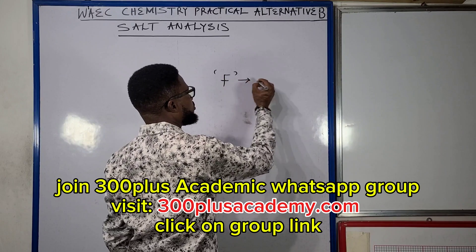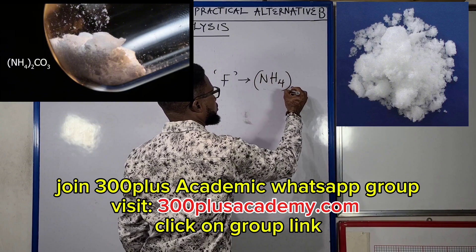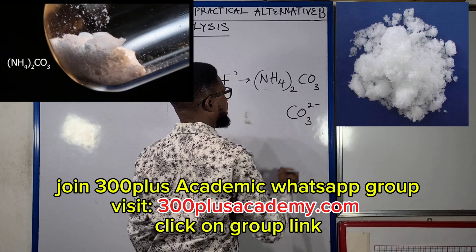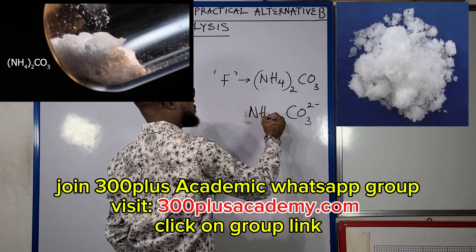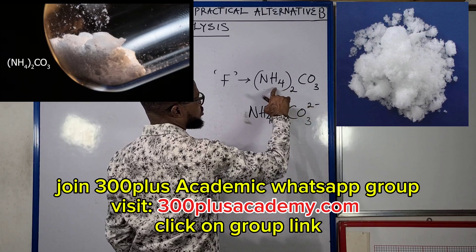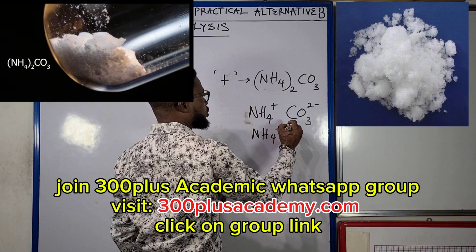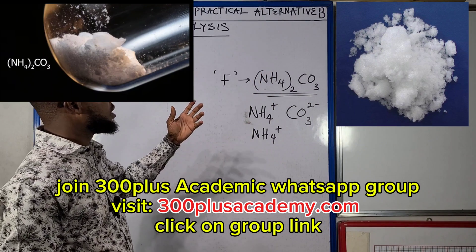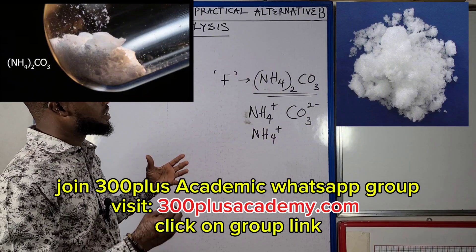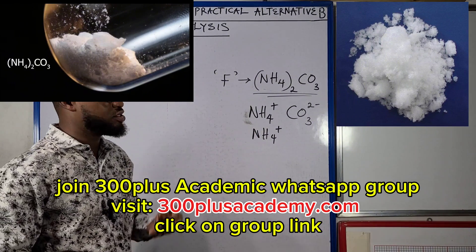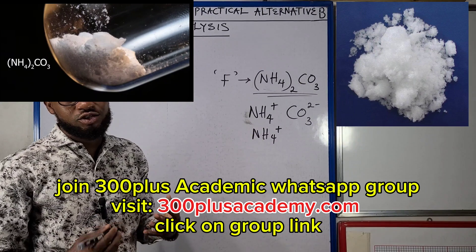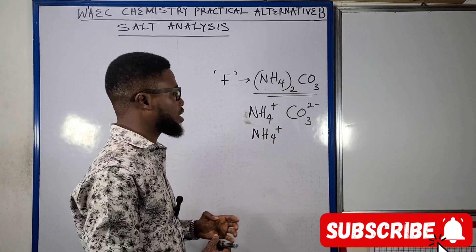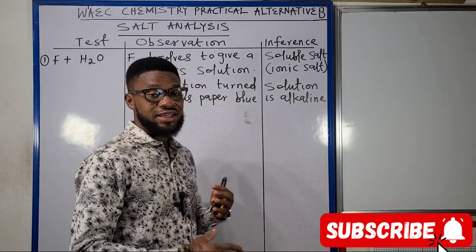This salt F is going to be ammonium carbonate. Recall that carbonate is actually a divalent radical. Ammonium is NH₄⁺ — that's plus one — and carbonate is minus two, so we need two NH₄⁺ to balance the two negative charges. This is the formula for ammonium carbonate. You're going to be given a salt tagged F, and that salt — as you can see in the image — is actually a white solid.